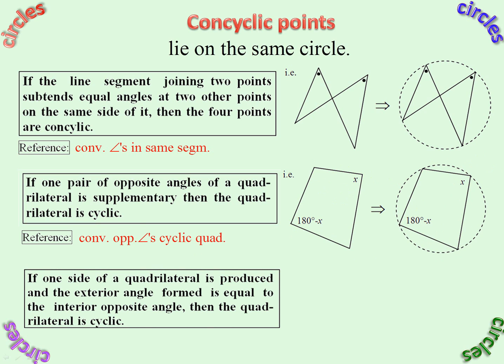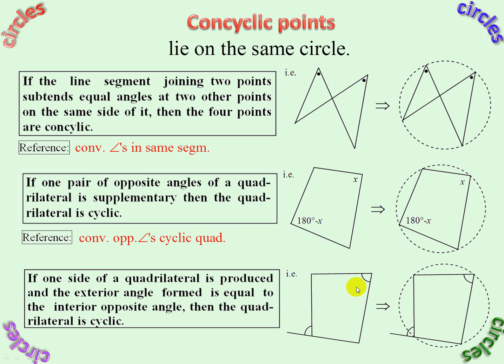If the exterior angle of a quadrilateral is equal to the interior opposite angle, then the quadrilateral is cyclic. So if that equals that, it follows that it must lie in a circle.